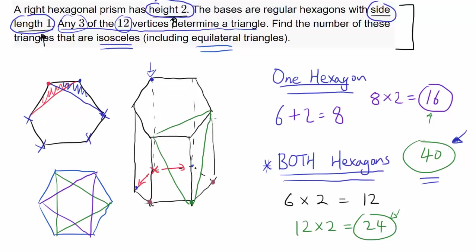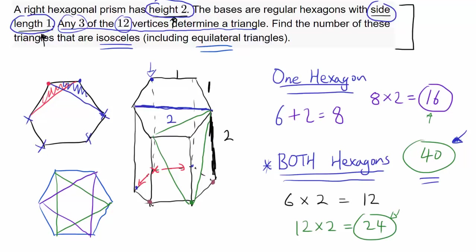The height is 2. You know the side length of the regular hexagon is 1. Is it possible to draw a segment of length 2 on the hexagon? Yes — by drawing equilateral triangles inside the hexagon, you can see a diagonal spanning two side lengths equals 2. With this, we can draw an isosceles triangle using a side of length 2 on the top hexagon and the height of the prism of 2, forming a 45-45-90 triangle with sides 2, 2, and 2√2. This was the case we did not count.